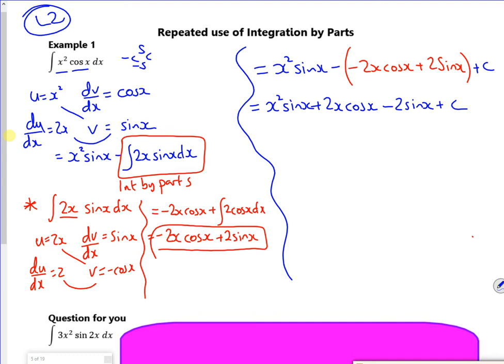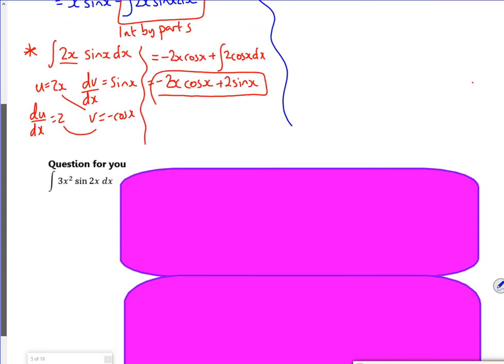So you have to do it twice. If that was an x cubed cos x, we'd have to do it 3 times. If it was x to the power of 10, we'd have to do it 10 times. So it's quite nice. It's nice, but it's just long-winded.